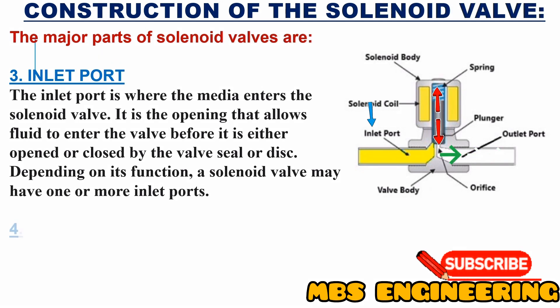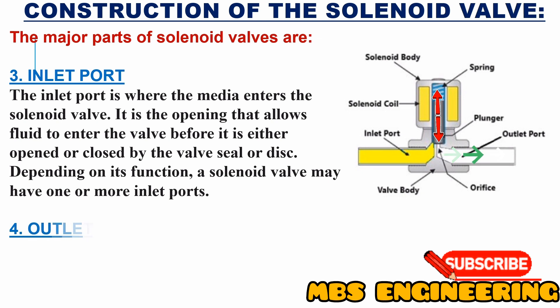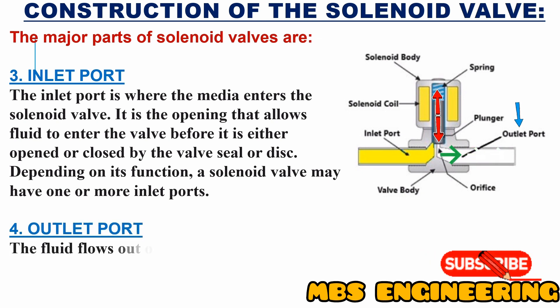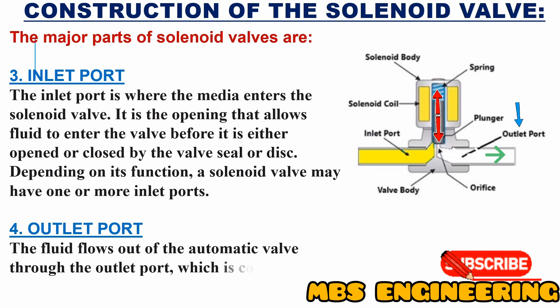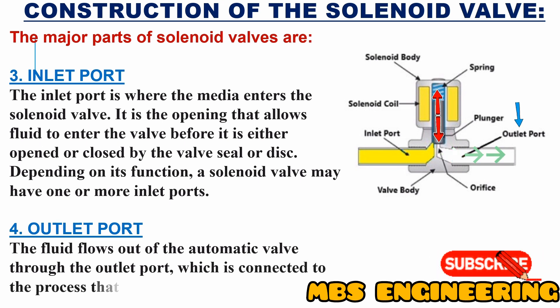The fourth part of the solenoid valve is the outlet port. The fluid flows out of the automatic valve through the outlet port, which is connected to the process that requires the fluid.